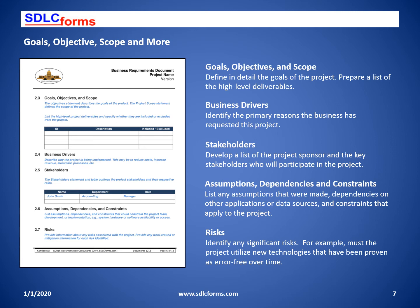Stakeholders should be identified by name, department, and their role in the project. Assumptions that were made insofar as to the project should be documented. Dependencies could be that another project must be completed before this project can be loaded into production. Constraints take many forms that can limit the project scope. Risks also take many forms — each risk must be identified with the mitigation approach and any workaround or alternate plan.